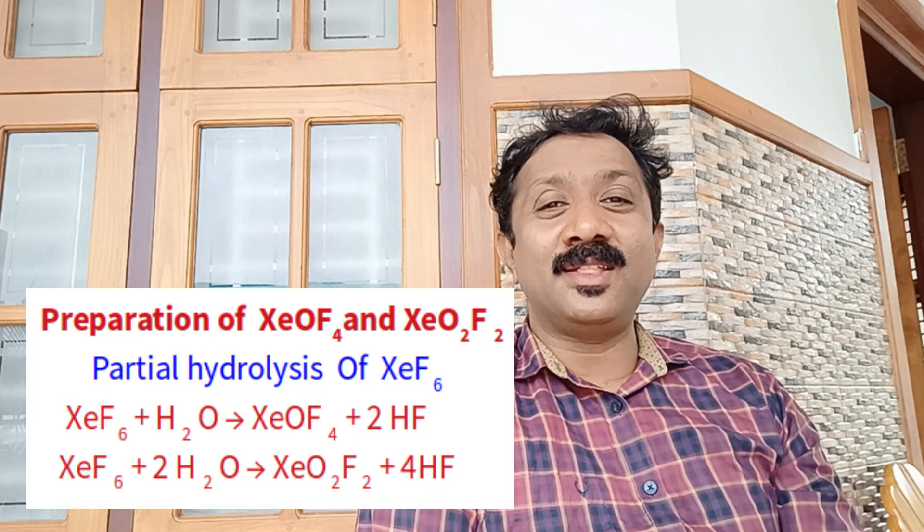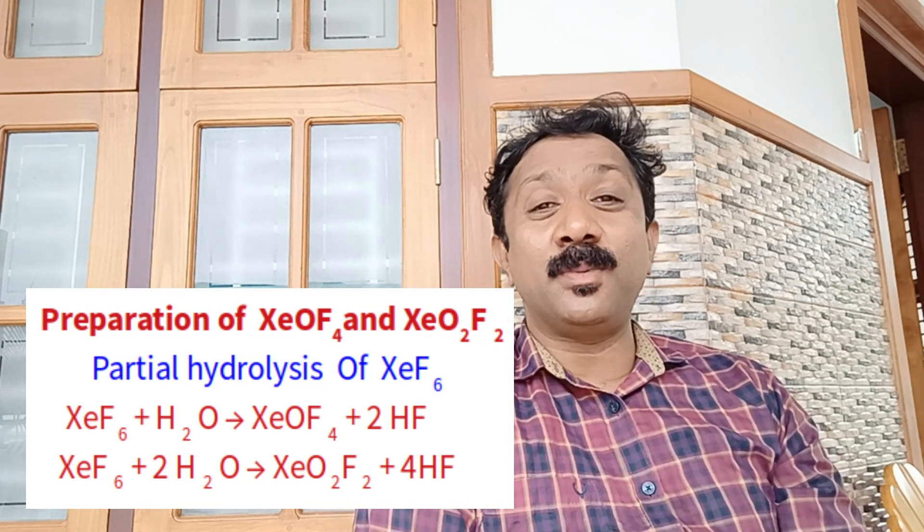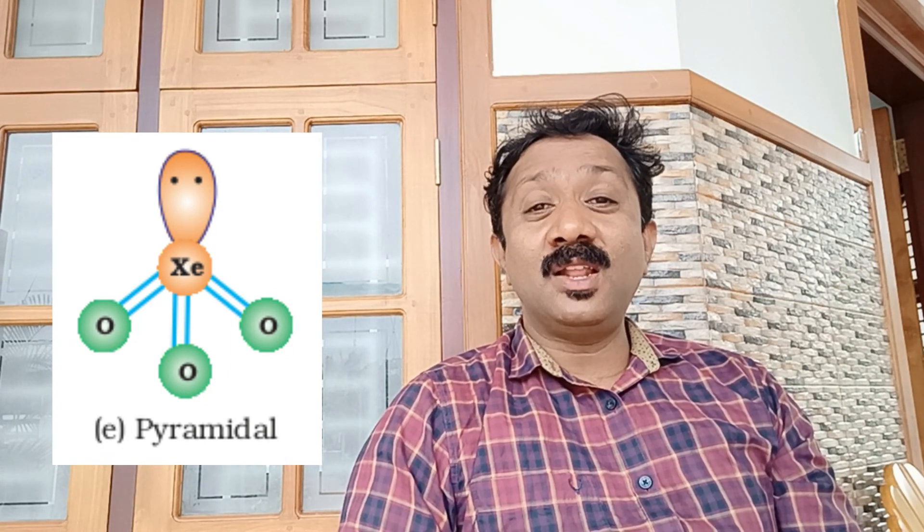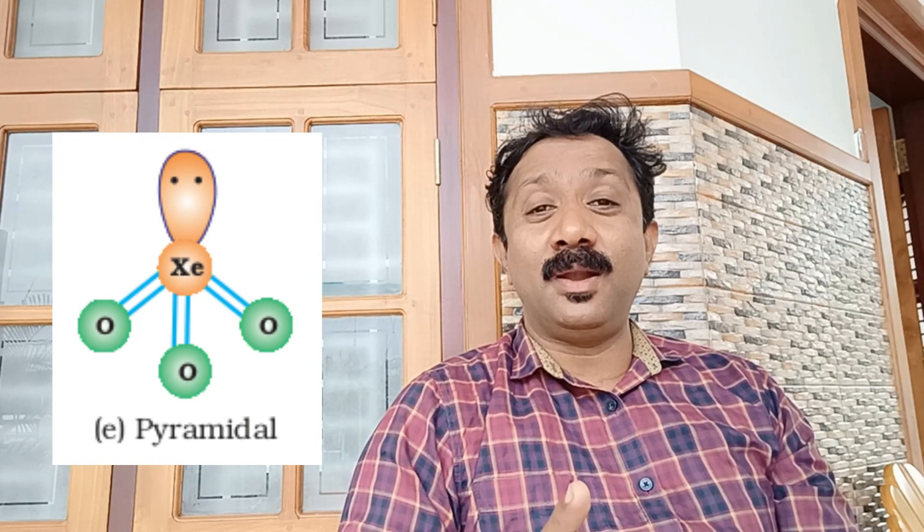The non-oxide form is XeO3, and the oxygen fluoride form is XeOF. XeO2F2 is also formed. For XeO3, the structure has oxygen at the center. Using VSEPR theory, the lone pairs and bond pairs on xenon — with three oxygen double bonds and one lone pair — give a tetrahedral shape.